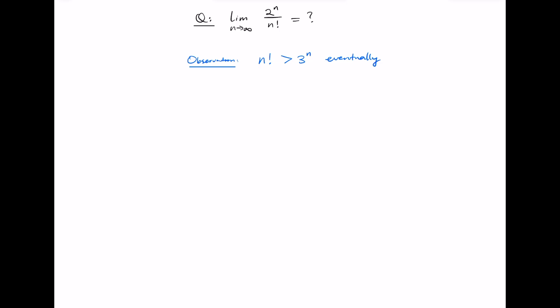Now, why is this true? So we can start by looking at an example: 5 times 4 times 3 times 2 times 1, that's 5 factorial, and we can compare this to 3 to the power of 5.